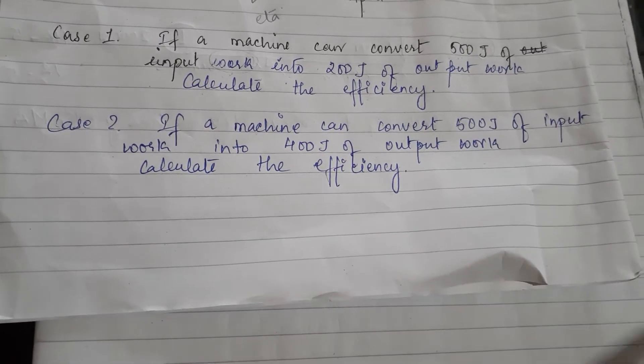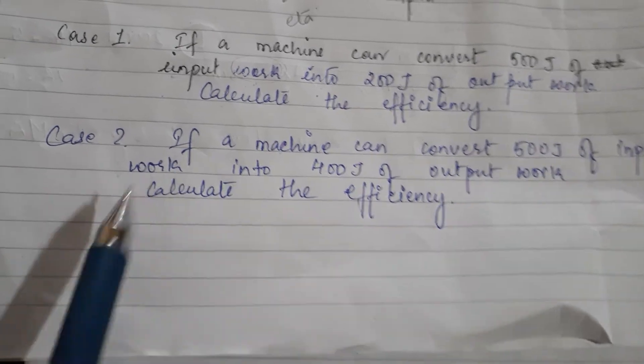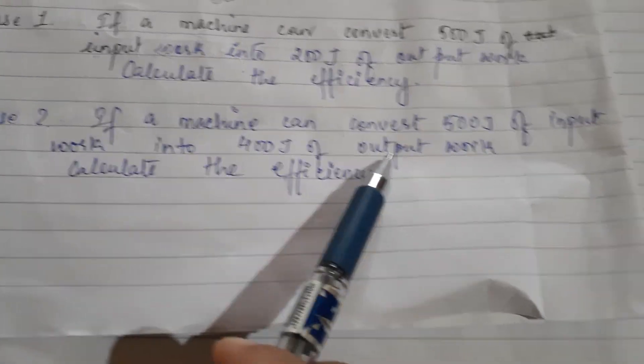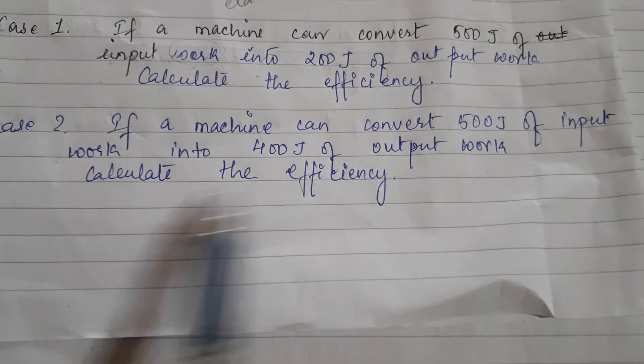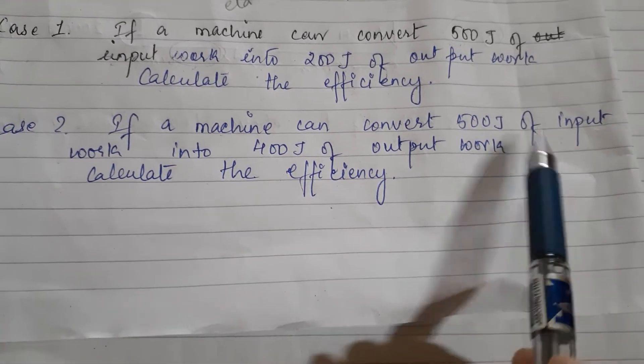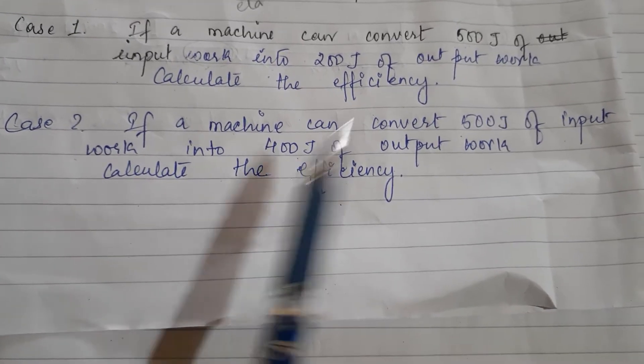Okay, now another numerical example: how to calculate efficiency. If a machine can convert 500 joules of input work into 400 joules of output work, calculate the efficiency. Input work: 500 joules, output work: 400 joules.